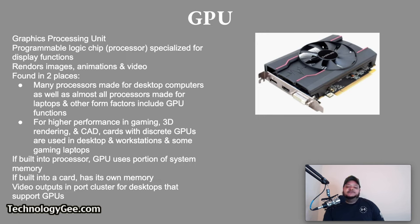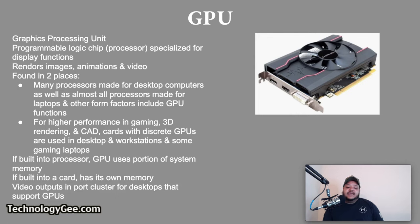The GPU stands for Graphics Processing Unit. A GPU is a programmable logic chip specialized for display functions — it renders images, animations, and video for the computer screen. GPUs are currently found in two places: many processors made for desktop computers as well as almost all processors for laptops include GPU functions. For higher performance in gaming, 3D rendering, and CAD, cards with discrete GPUs are used in desktops, workstations, and some gaming laptops. If the GPU is built into the processor it typically uses a portion of system memory; if built into a card, the card has its own memory.